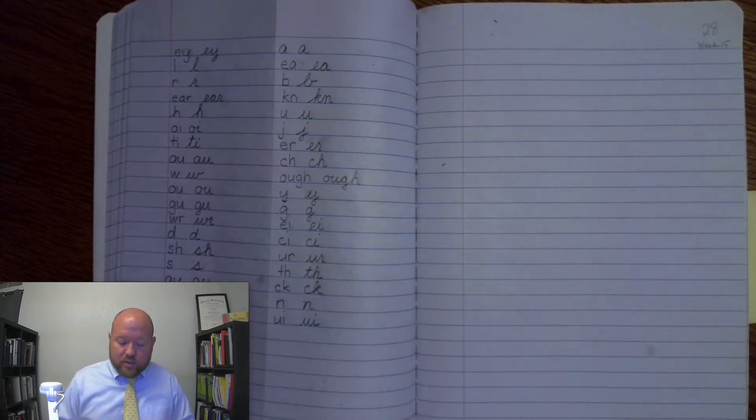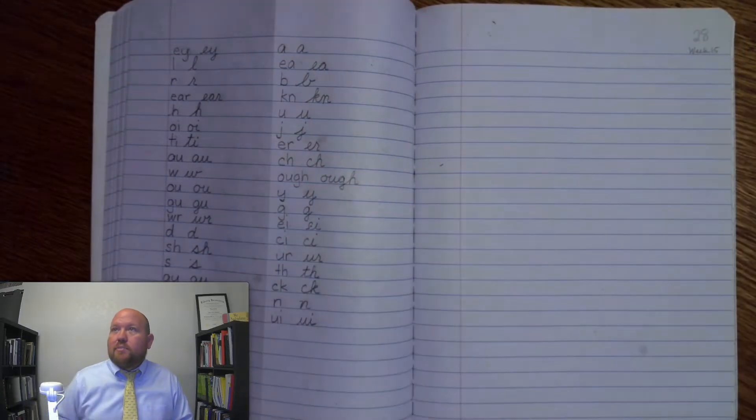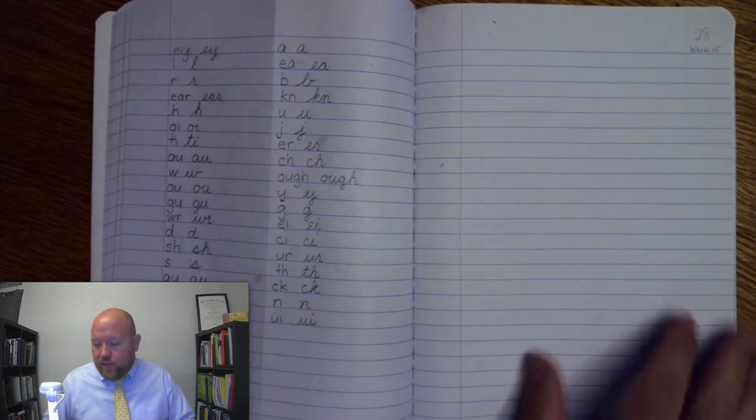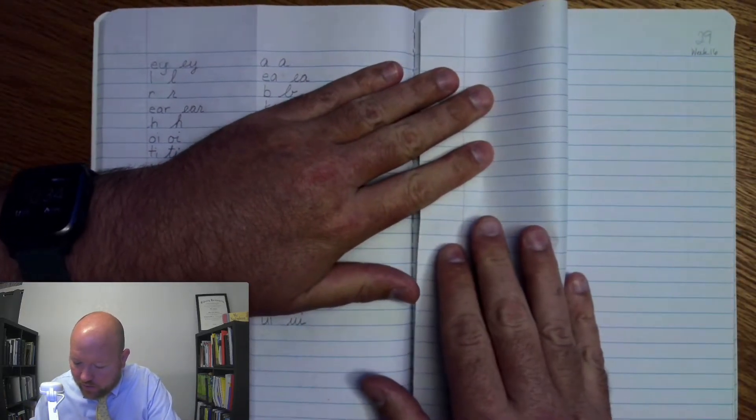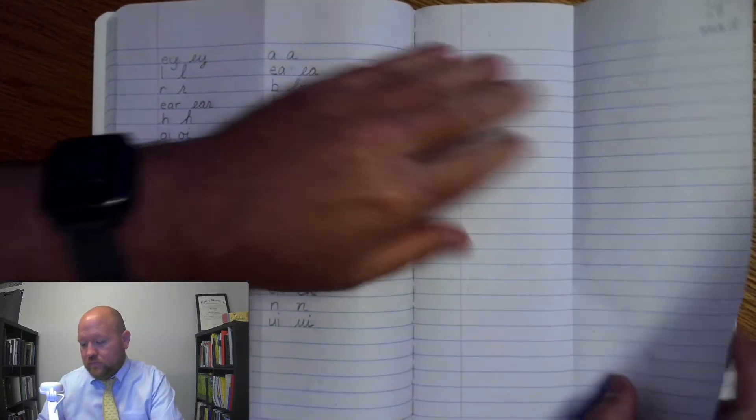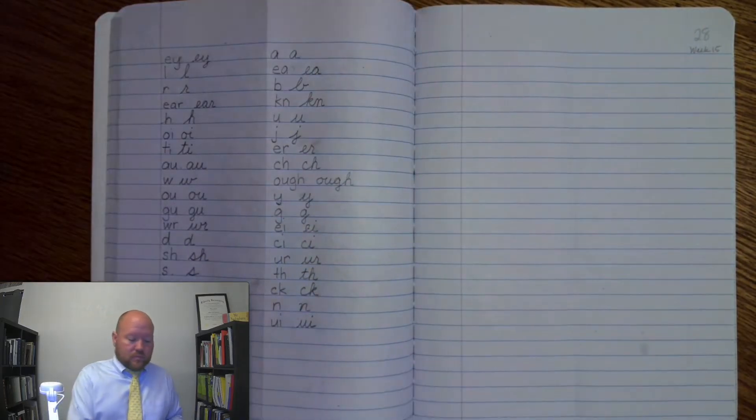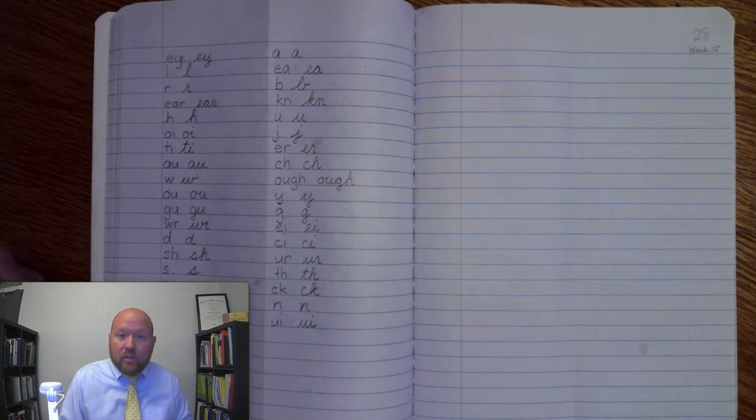All right. Now, this time we'll be doing it writing. So, if you haven't already, take out and turn in your spelling books to page 28. Let's go ahead and take this page and fold it neatly in half, lining up the red lines.